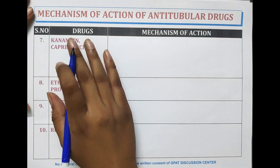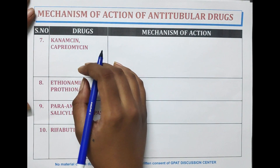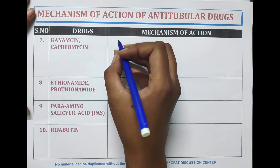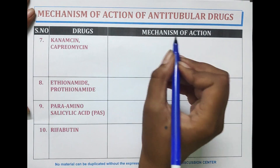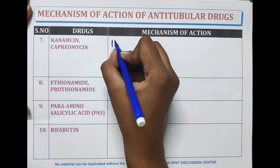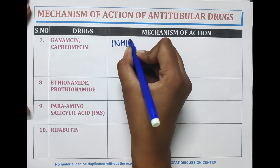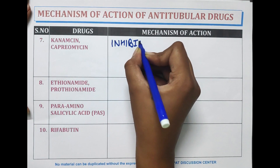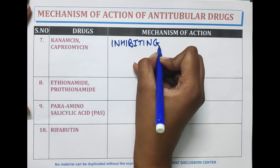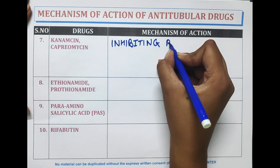The next drugs are kanamycin and capreomycin. These drugs act by inhibiting bacterial protein synthesis.